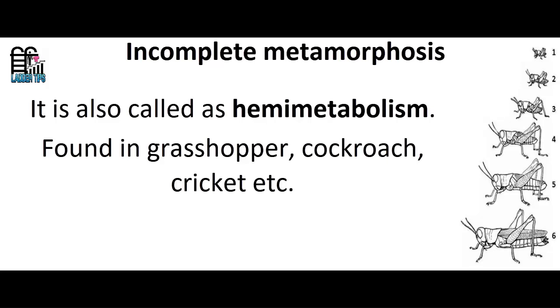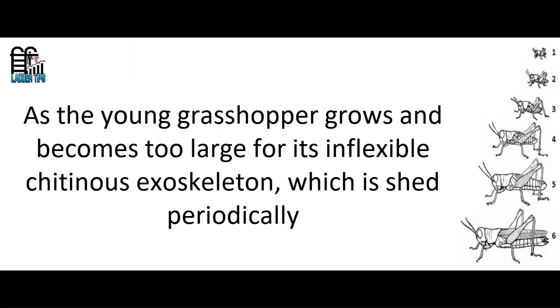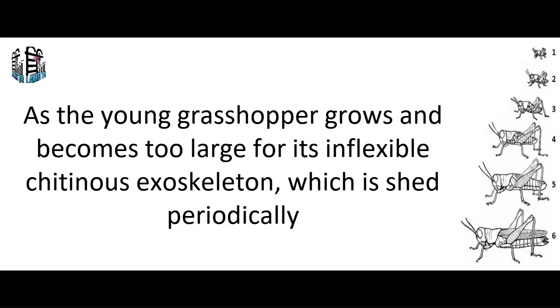Incomplete Metamorphosis is found in grasshopper, cockroach, and cricket. As the young grasshopper grows and becomes too large for its chitinous exoskeleton, the exoskeleton is shed periodically.